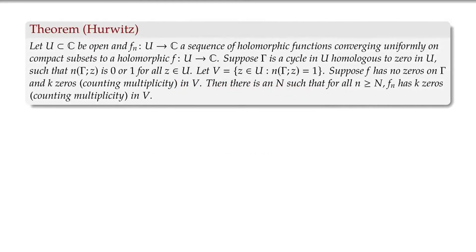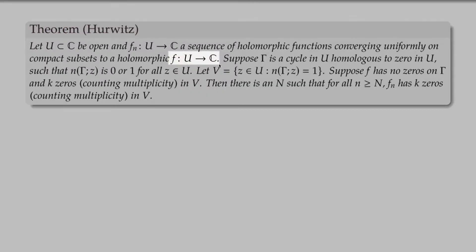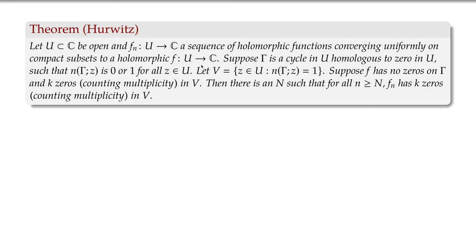So suppose that we have a sequence of holomorphic functions and the correct convergence is uniformly on compact subsets. And we know that if we have uniform convergence on compact subsets, then we have a holomorphic limit. Now suppose that we have a gamma inside this U, and as usual, it's homologous to zero in U, meaning it doesn't go around anything in the complement of U.